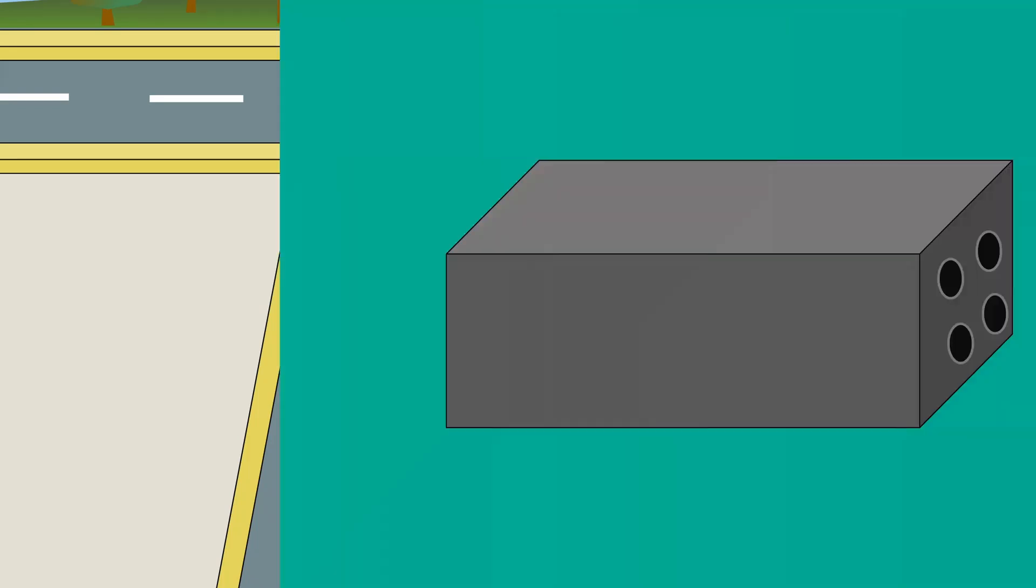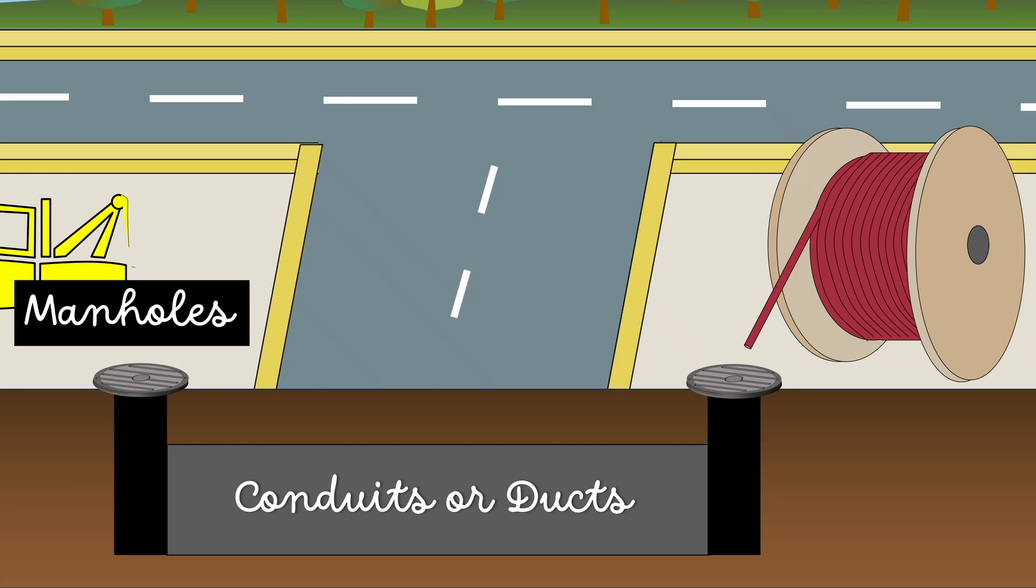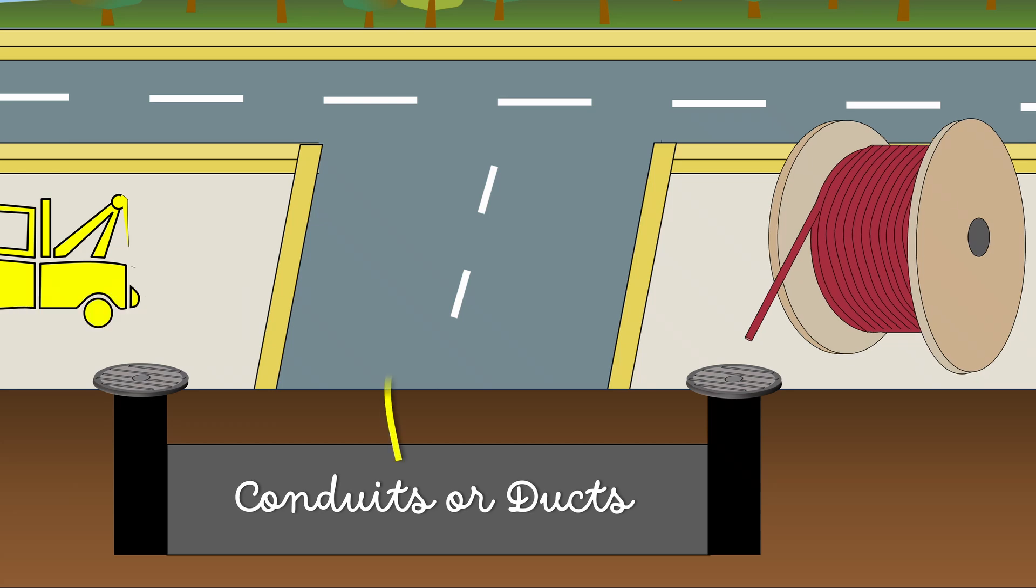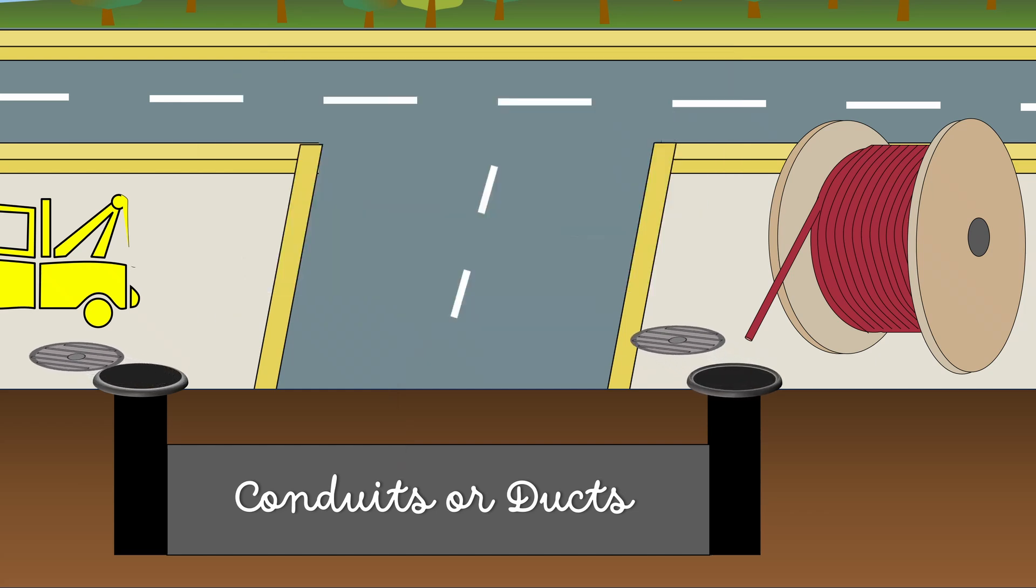In this method, conduits or ducts are laid in the ground with manholes at suitable positions along the cable route. This is a four-way underground duct line. The cables are then pulled into position from manholes.